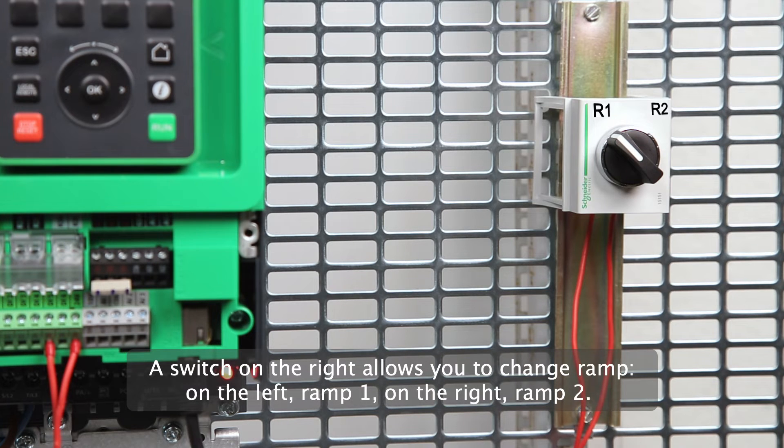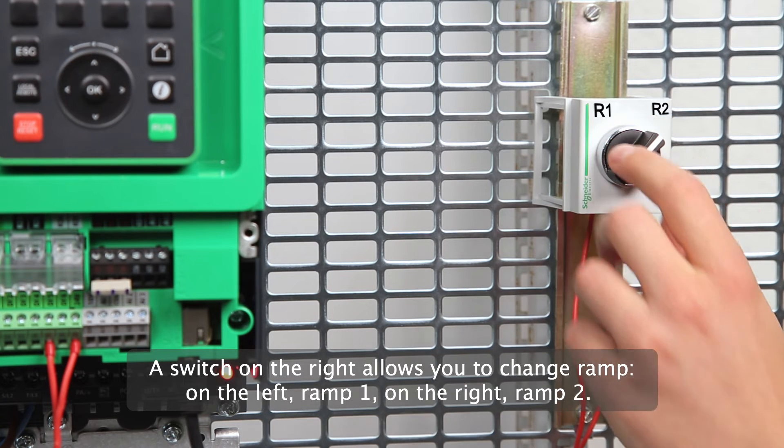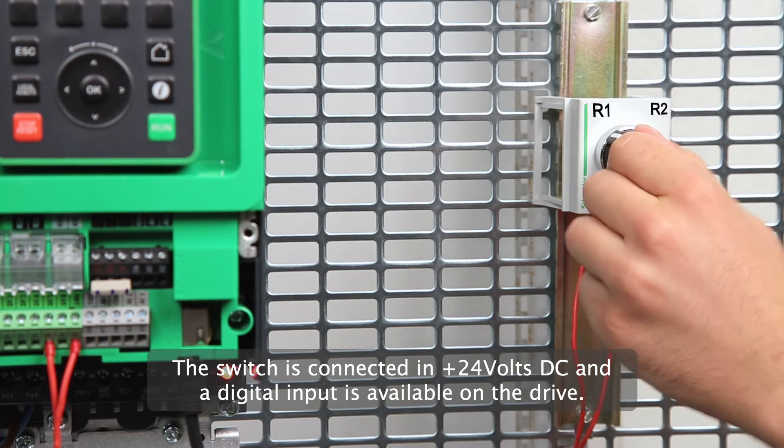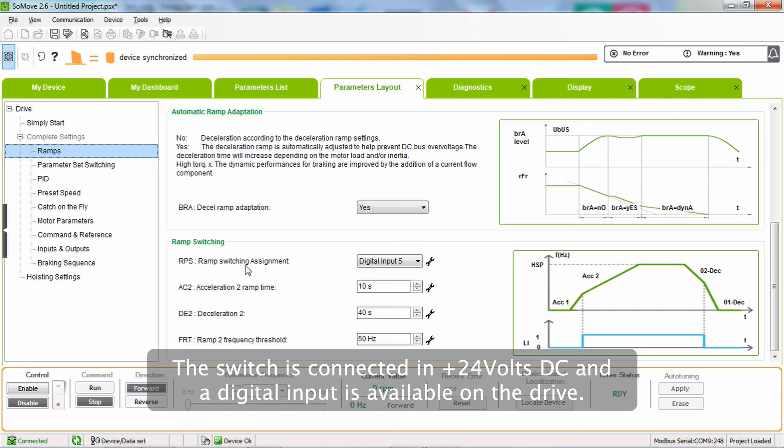A switch on the right allows you to change ramp. On the left, ramp 1. On the right, ramp 2. The switch is connected in plus 24 volts DC and a DI input is available on the drive.